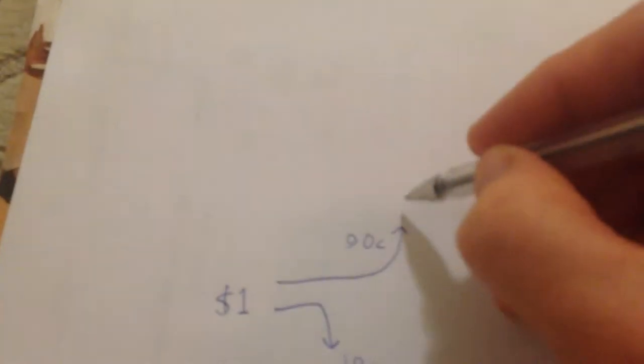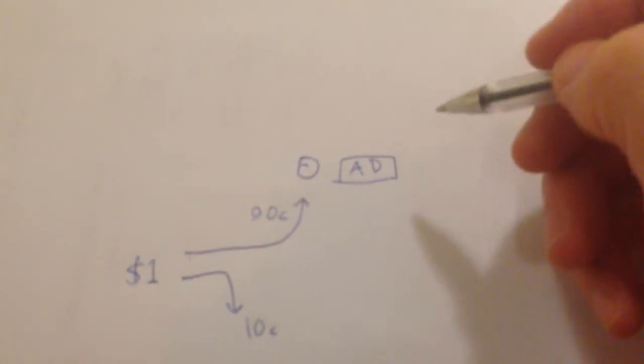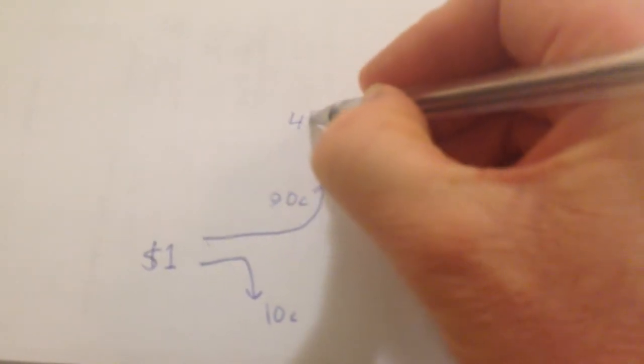The first person here is the person whose wall the ad was shown on. So that's an ad that gets shown here. Now this person here is going to get $0.45.